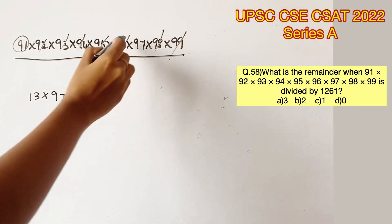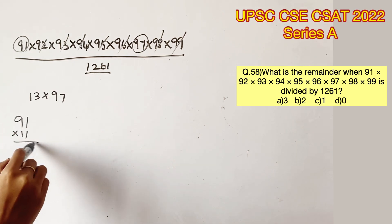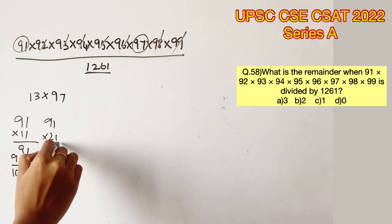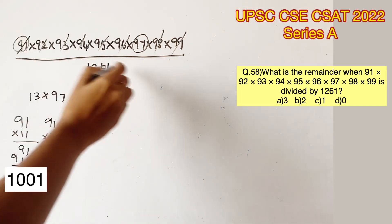we are left with 91 and 97. So if you see the units place in 1261, it's 1. So 91 should be multiplied by some number which is ending in 1. So let's check with 11. That will give us 1001. And if you check with 21, it's going to exceed 1261 by a lot.